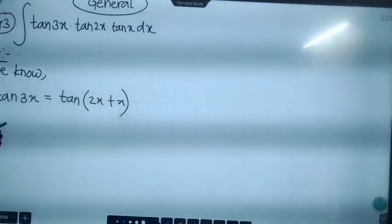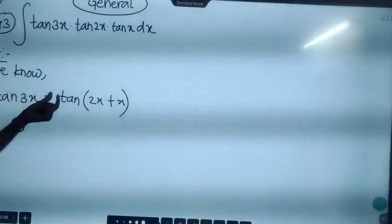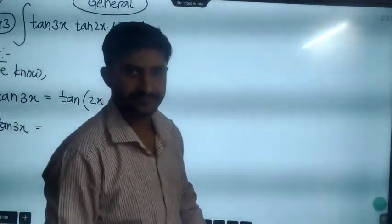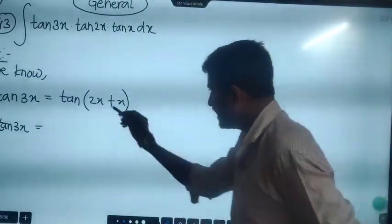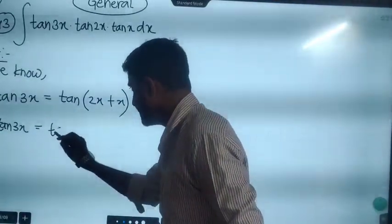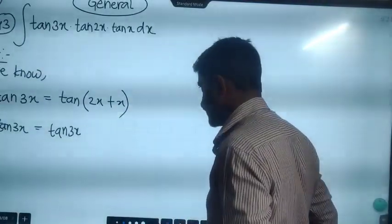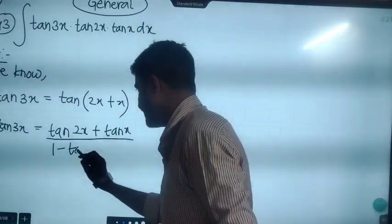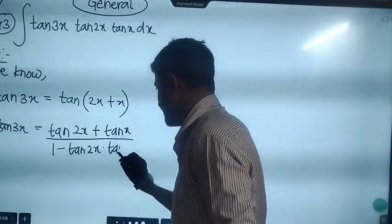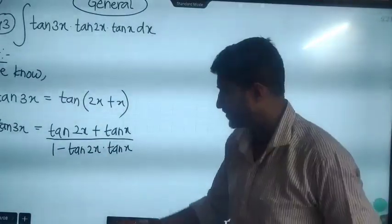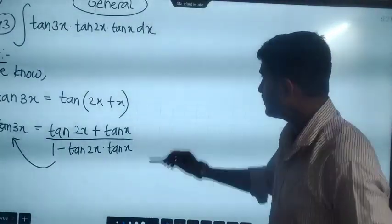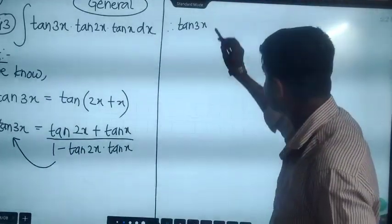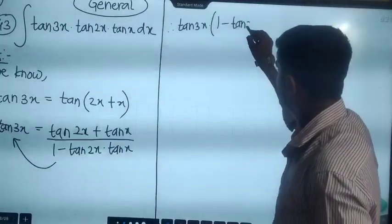Therefore, integration cannot be done normally with tan of 3x directly. Instead, tan of 3x equals tan(a + b), which gives us tan a plus tan b divided by 1 minus tan a into tan b. So tan of 3x into the bracket becomes 1 minus tan of 2x into tan of x.